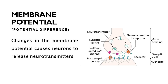Membrane potential is very important in nerve cells because changes in membrane potential are used by the cells to code and transmit information. The membrane potential of retinal neurons ranges from minus 35 millivolts to minus 70 millivolts. The minus means that the inside of the cell is negatively charged with respect to the surrounding extracellular fluid.